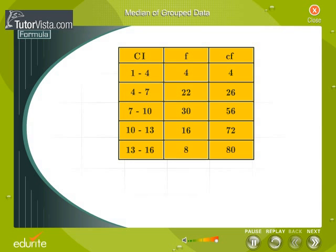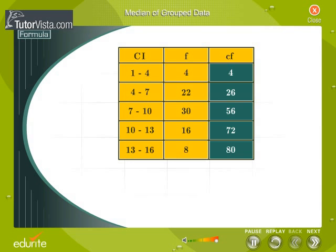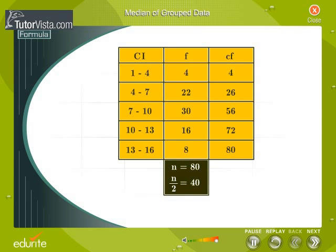To find the median class, we find the cumulative frequency of all classes and calculate n by 2. The median class is the class whose cumulative frequency is greater than and nearest to n by 2.